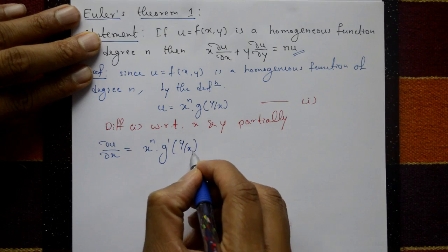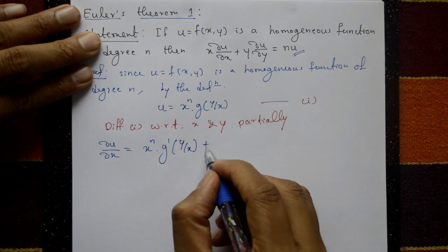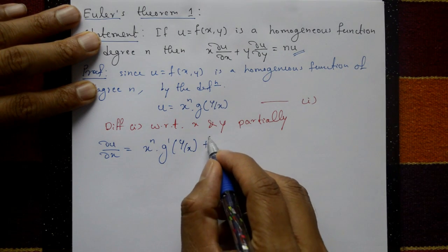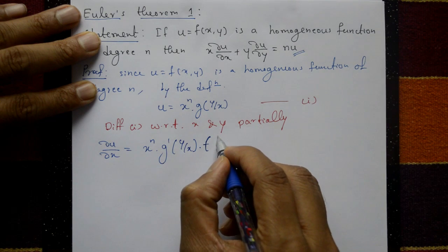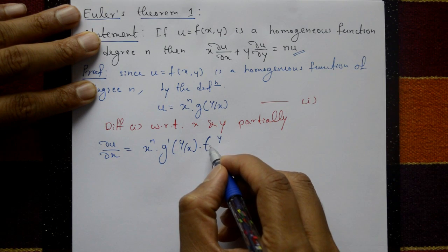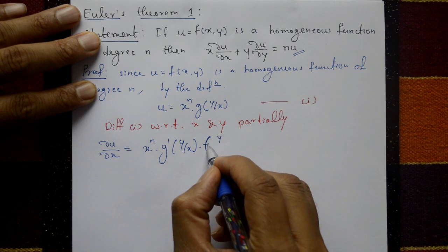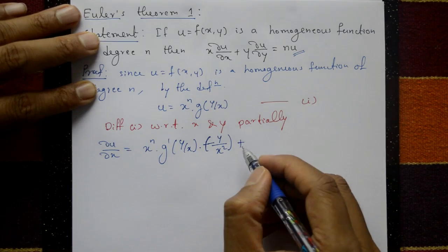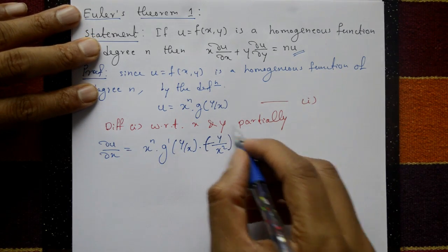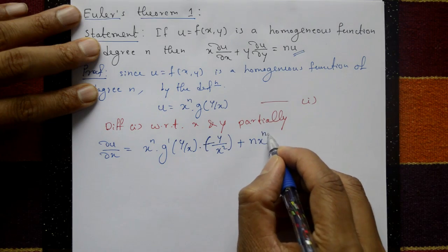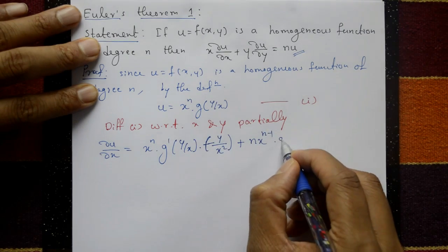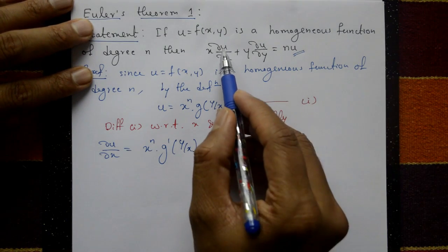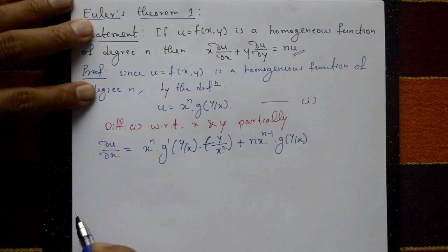Differentiating g(y/x) with respect to x: g′(y/x) times the derivative of y/x, which gives minus y/x². So ∂u/∂x equals minus xⁿ⁻² · y · g′(y/x) plus n · xⁿ⁻¹ · g(y/x). Now multiply the whole equation by x.